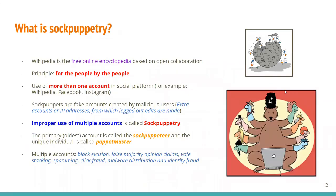Before diving deep into the research, let's have a generic understanding of sock puppetry and its significance in Wikipedia. Wikipedia is a free online encyclopedia based on open collaboration — its principle is for the people, by the people. Almost anyone can contribute and edit, and articles are generally written from reliable and neutral sources.